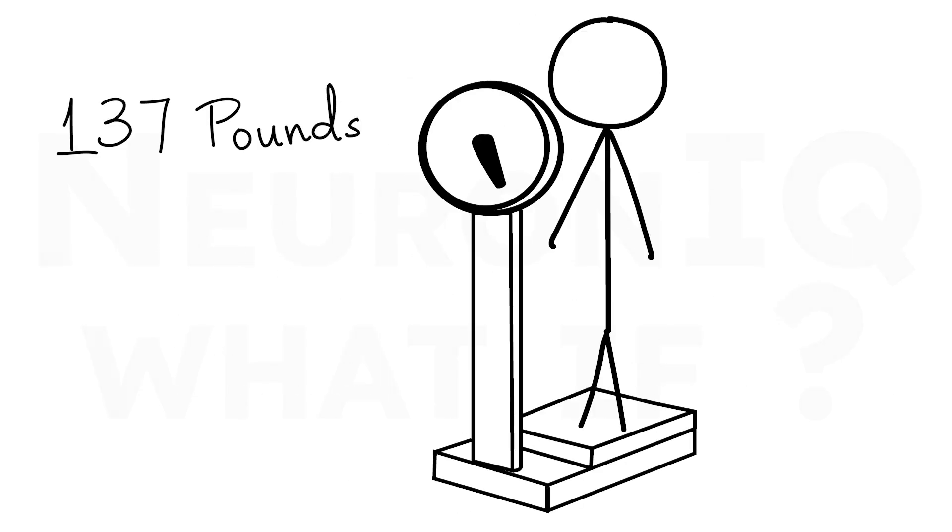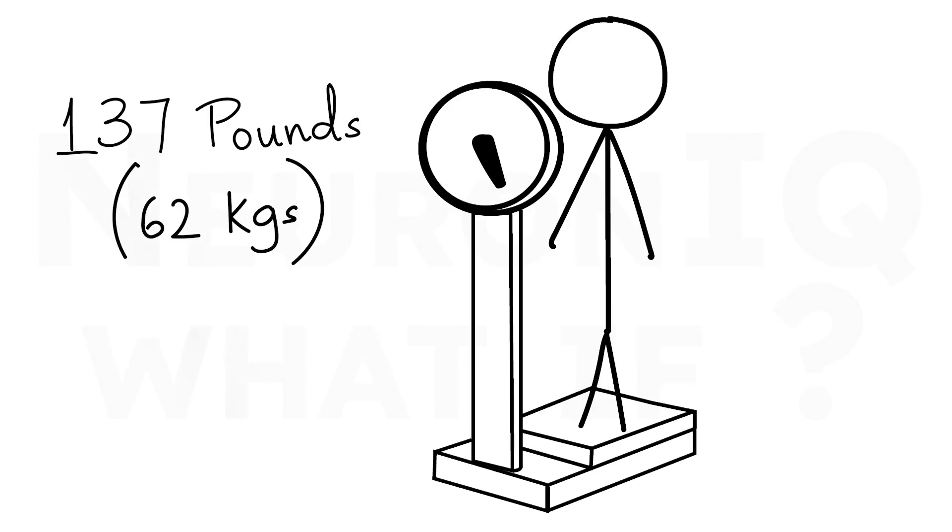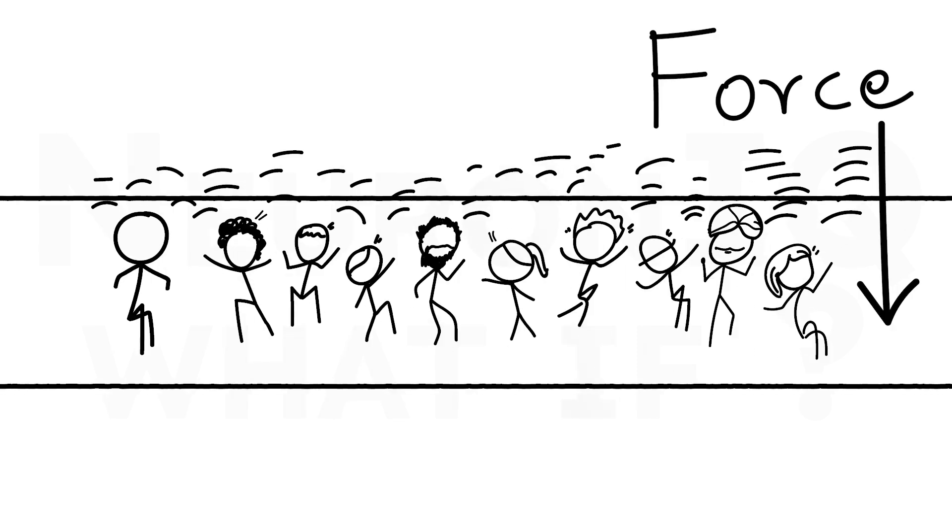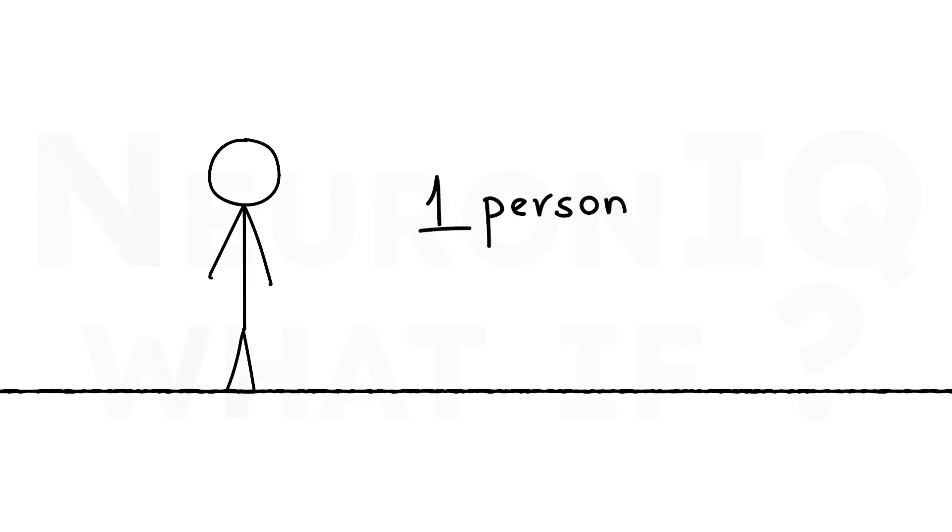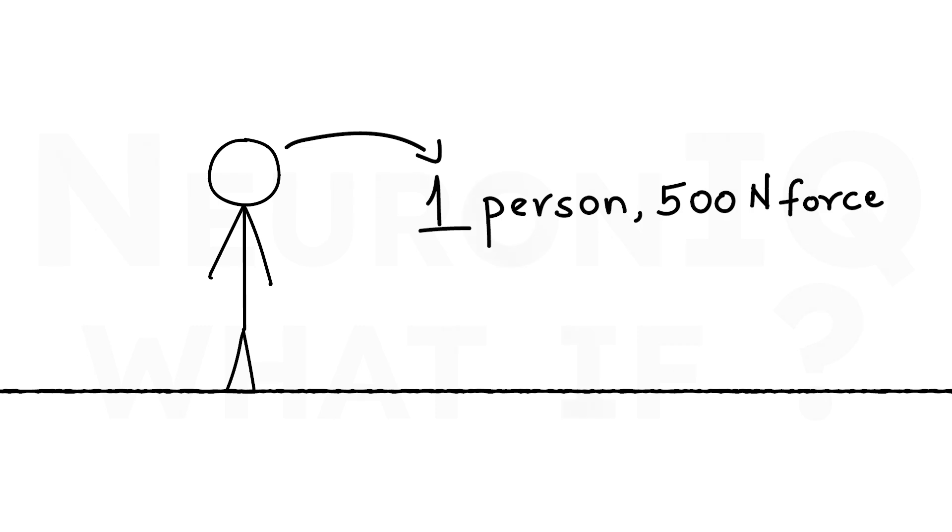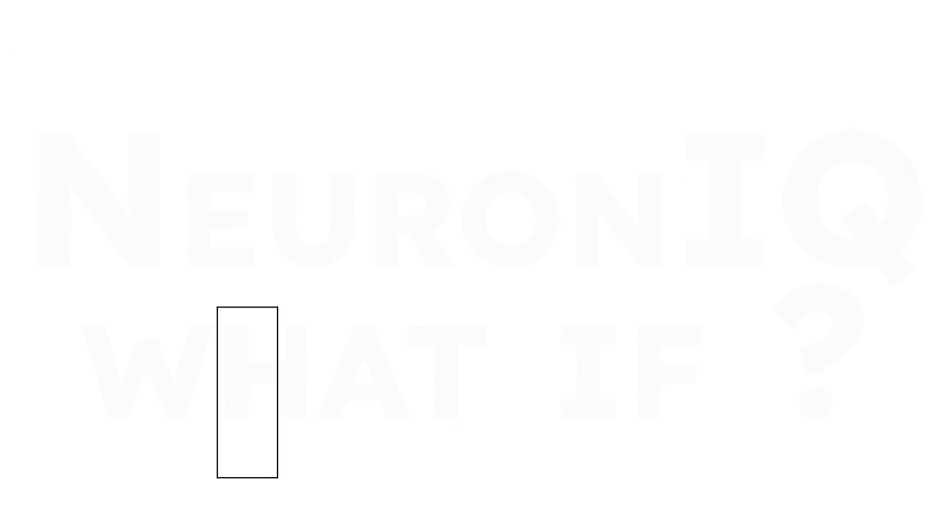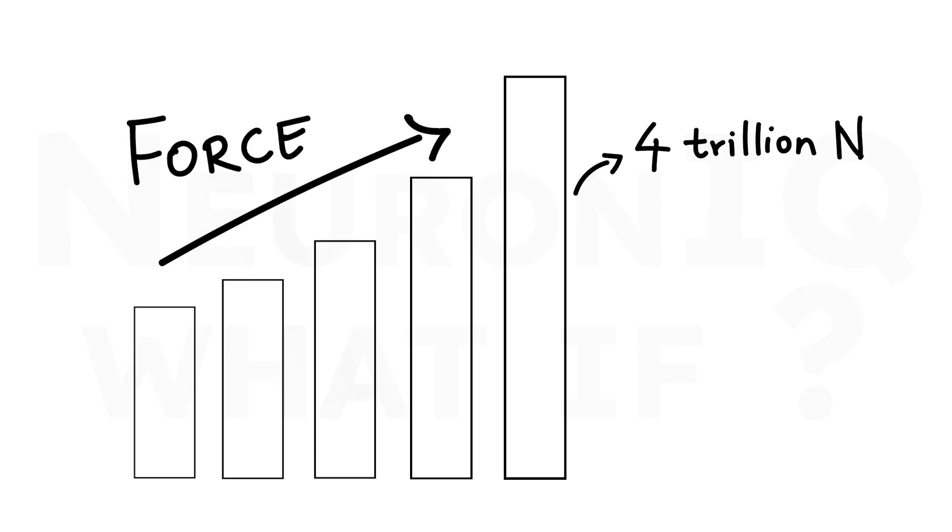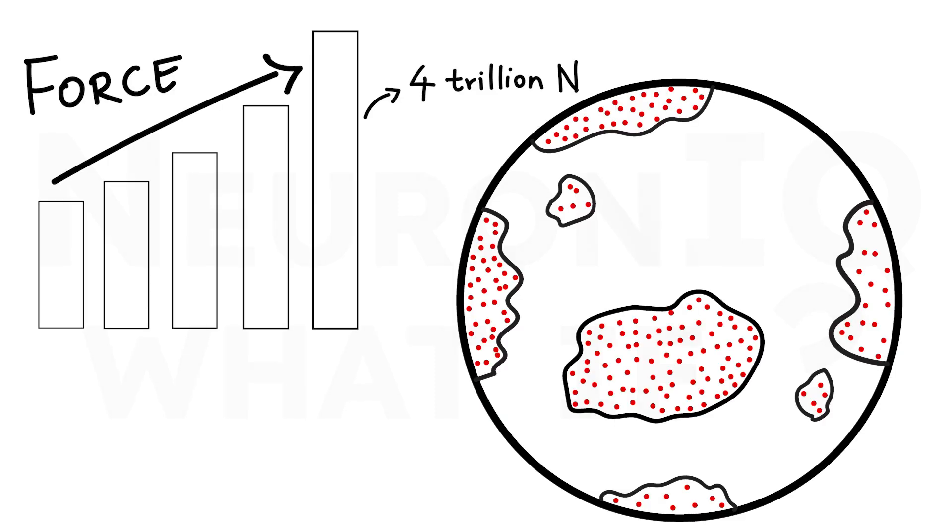An average human weighs about 137 pounds, or 62 kilograms. Jumping generates a force several times greater than a person's weight. So let's conservatively estimate that each person produces about 500 newtons of force during a jump. Multiply that by 8 billion people, and you've got approximately 4 trillion newtons of force being applied to the Earth. But what does that mean?